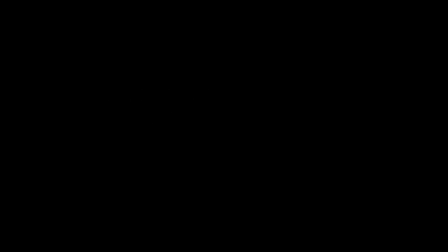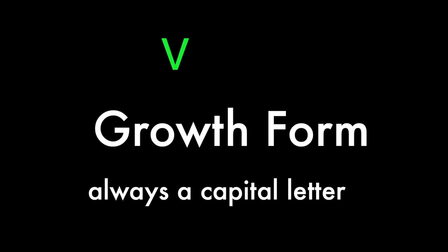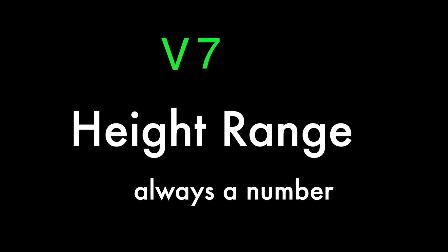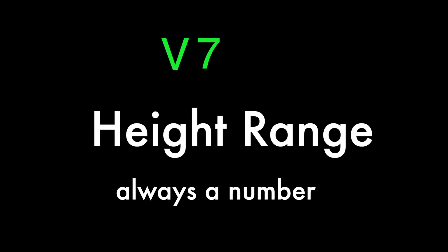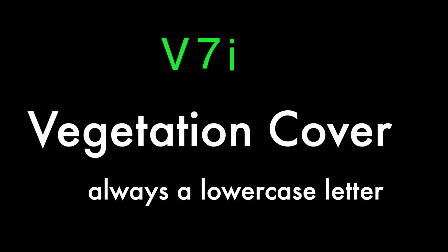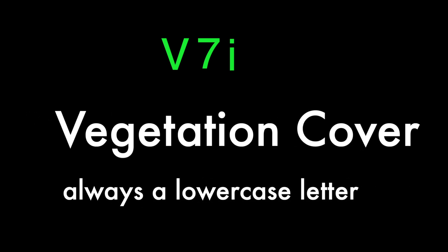In the physiognomic formula, we use three symbols: a capital letter to describe the growth form, a number to set the height range, and a lowercase letter to describe the degree of vegetation cover.